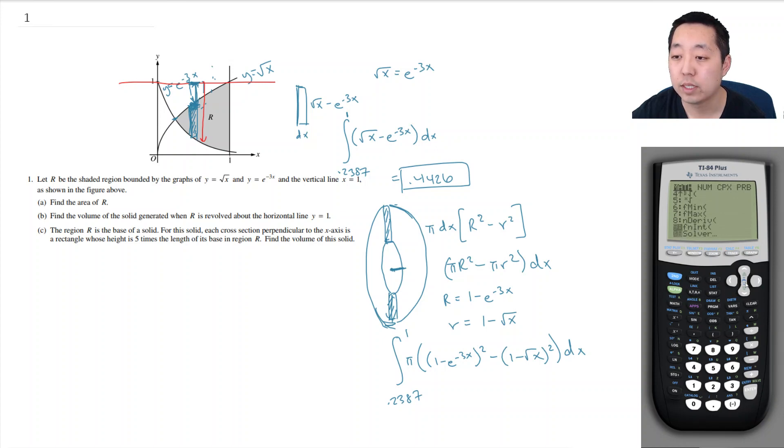Alright. So math, I think it's nine. So I'm going to do, I'll do all of it. Pi times one minus e to the minus three x squared minus one minus square root of x squared, close parentheses. We're integrating over the variable x and we're going from 0.2387 all the way to one. This gives me 1.424.